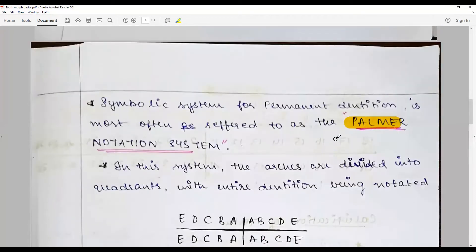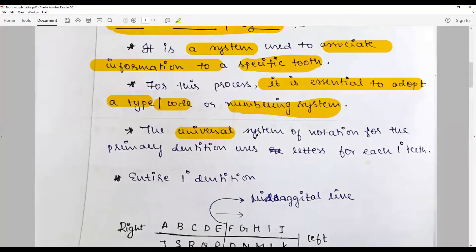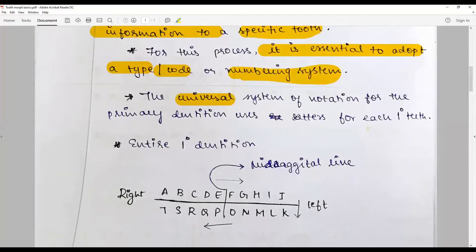How does the universal system for deciduous dentition work? It works with A, B, C, D, E. From the right upper deciduous second molar, we designate A and it goes clockwise from A, B, C, D, E.